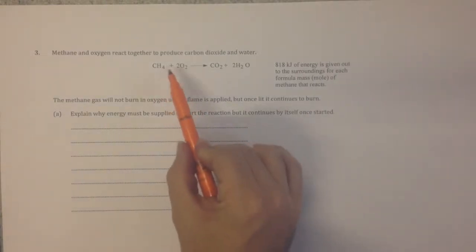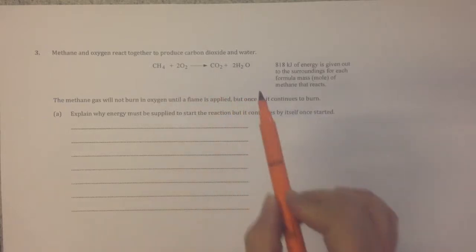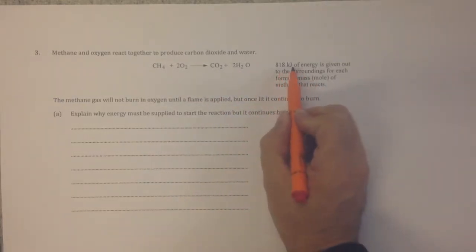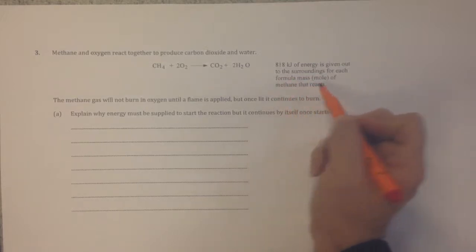We're given an overall equation: methane plus oxygen goes to CO2 and water. The key point is 818 kilojoules is given out to the surroundings for each mole of methane that reacts.